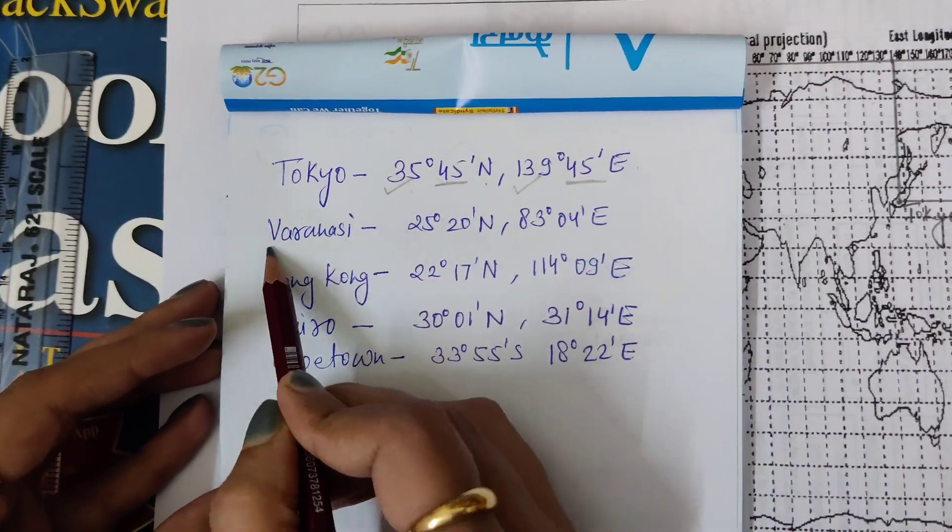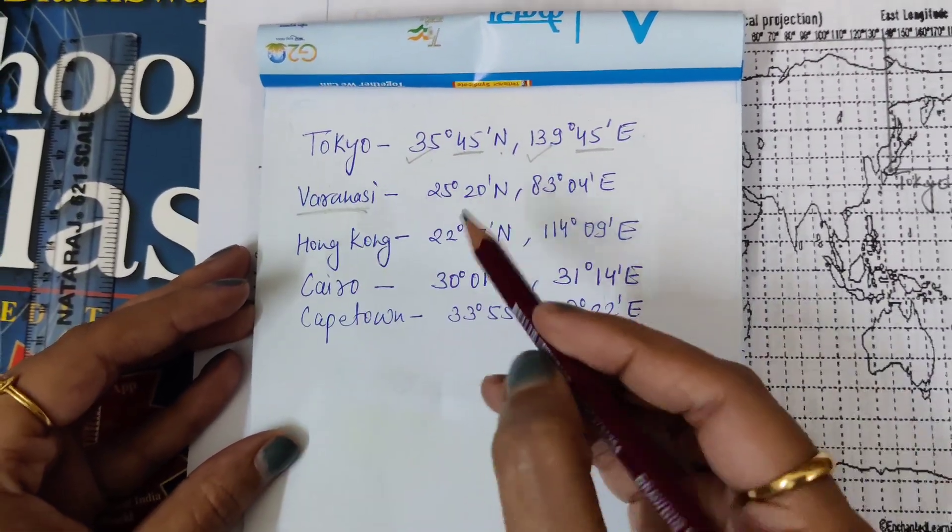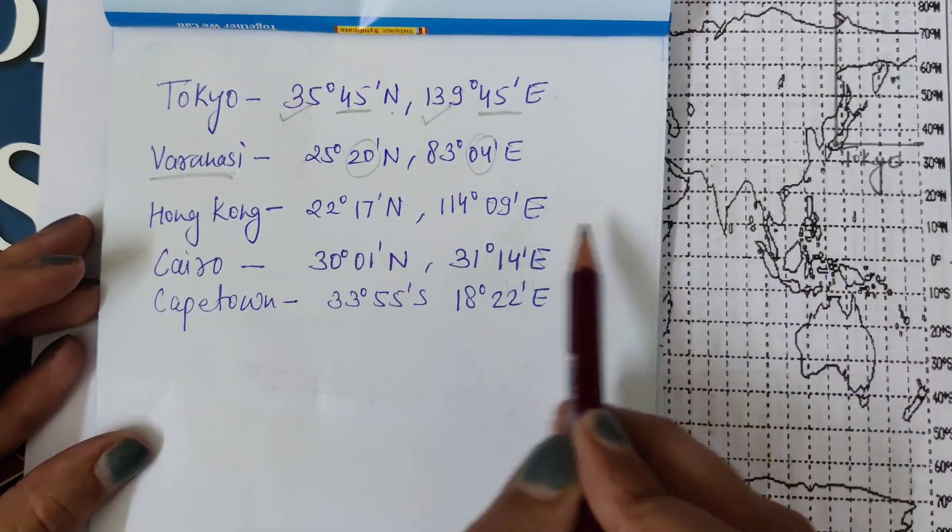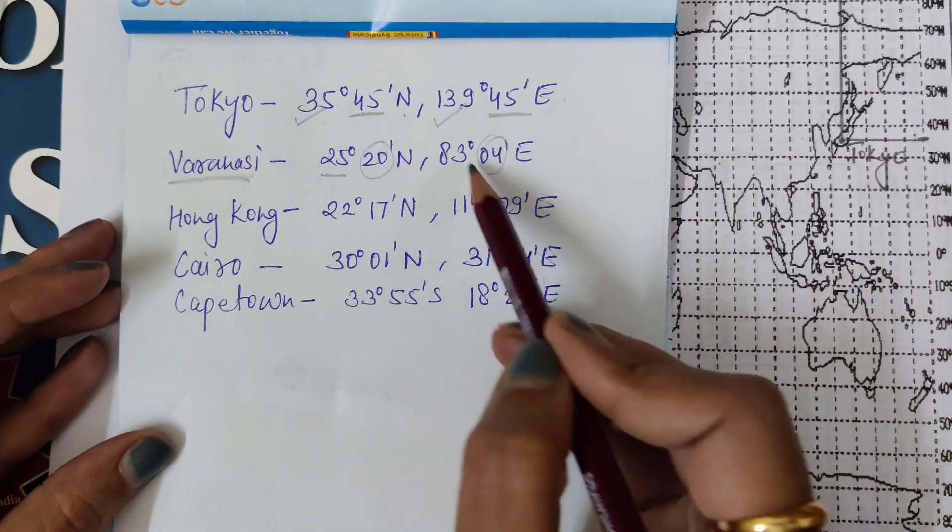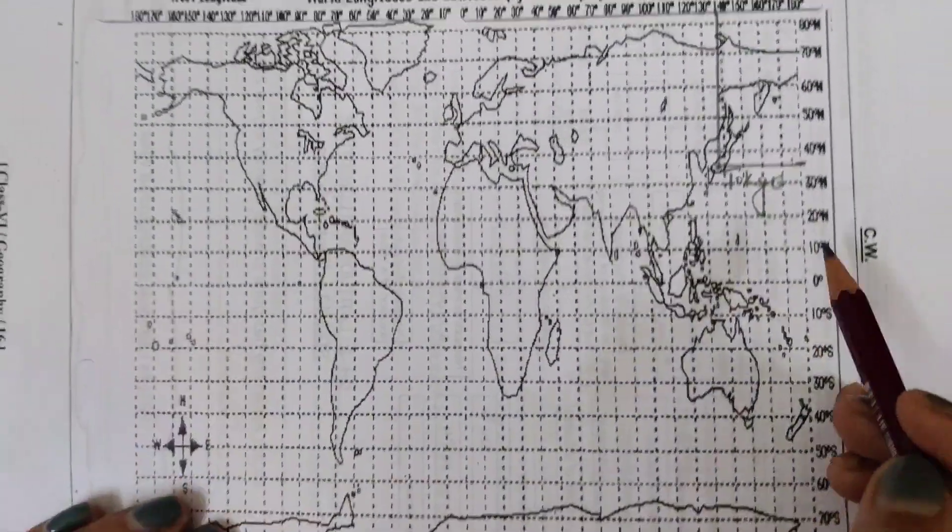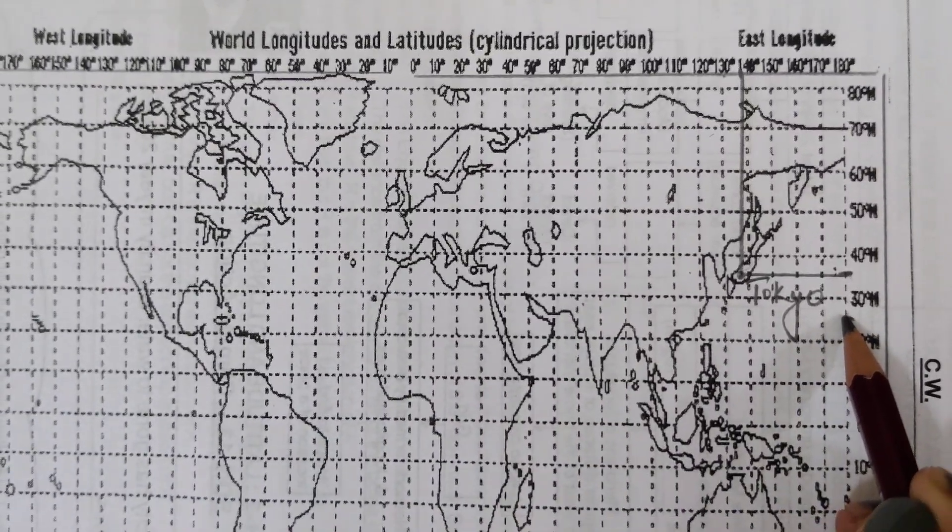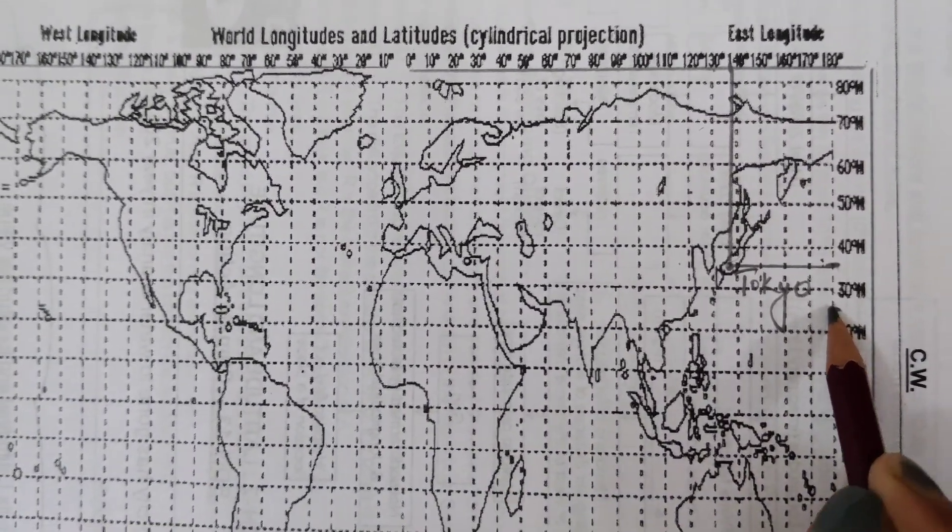The next place is Varanasi. Again, leave the minutes: 25 degrees north, 83 degrees east. For 25 degrees north, between 20 to 30, mark it here at 25. Then 83 degrees east.